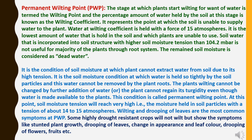Now, the permanent wilting point: the stage at which a plant starts wilting for want of water is termed the wilting point, and the percentage of water held by the soil at this stage is known as the wilting coefficient. It represents the point at which the soil is unable to supply water to the plant. The wilting coefficient is held with a force of 15 atmospheres. It is the lowest amount of water held in the soil which plants are unable to use. Soil water with a moisture tension greater than 10^4.2 millibar is not useful for the majority of plants through the root system; the remaining soil moisture is considered dead water.